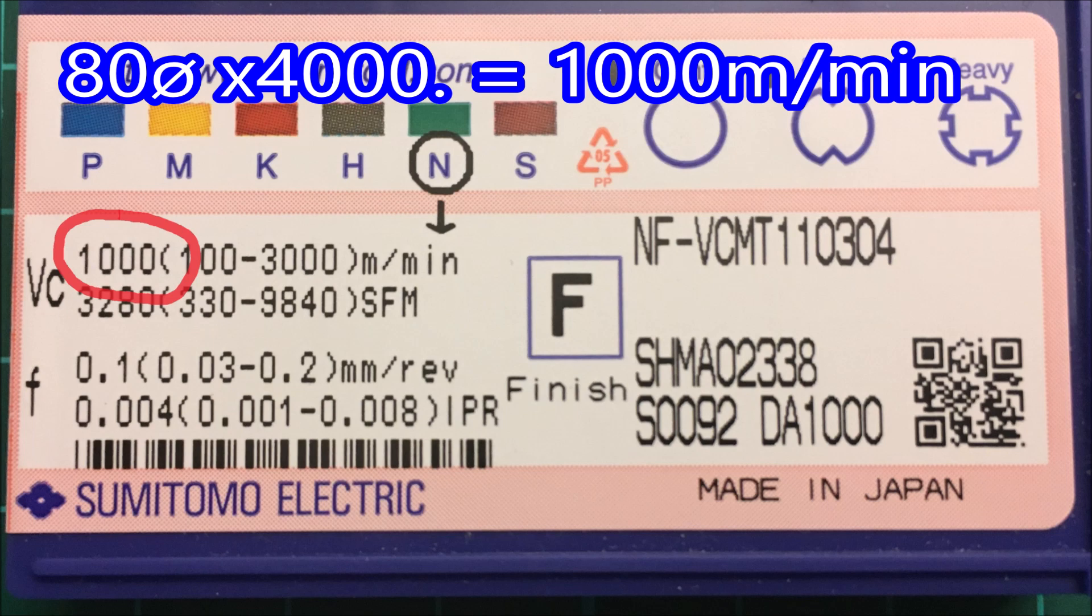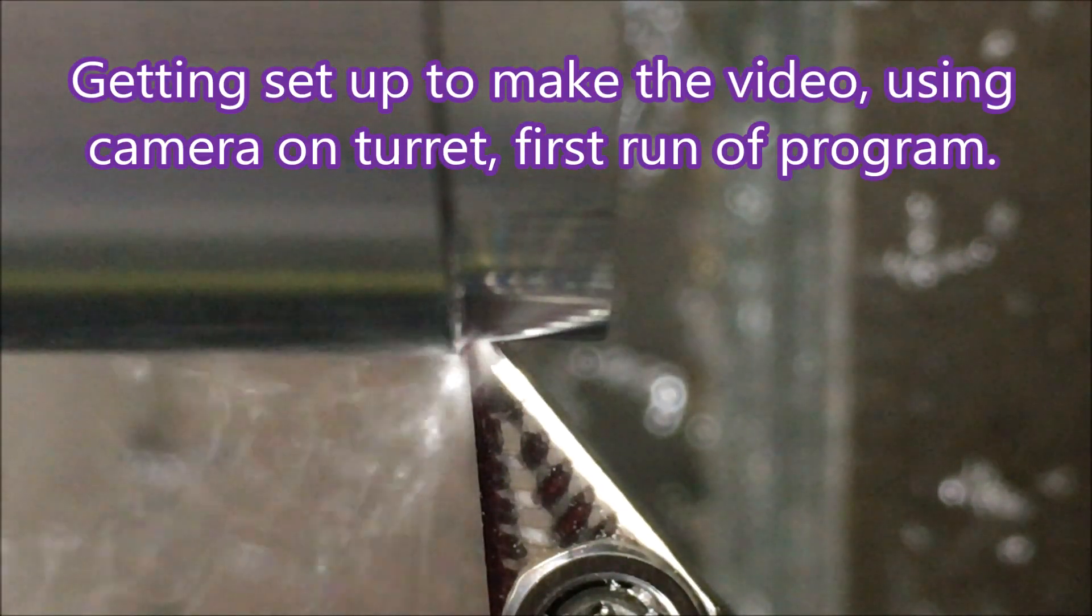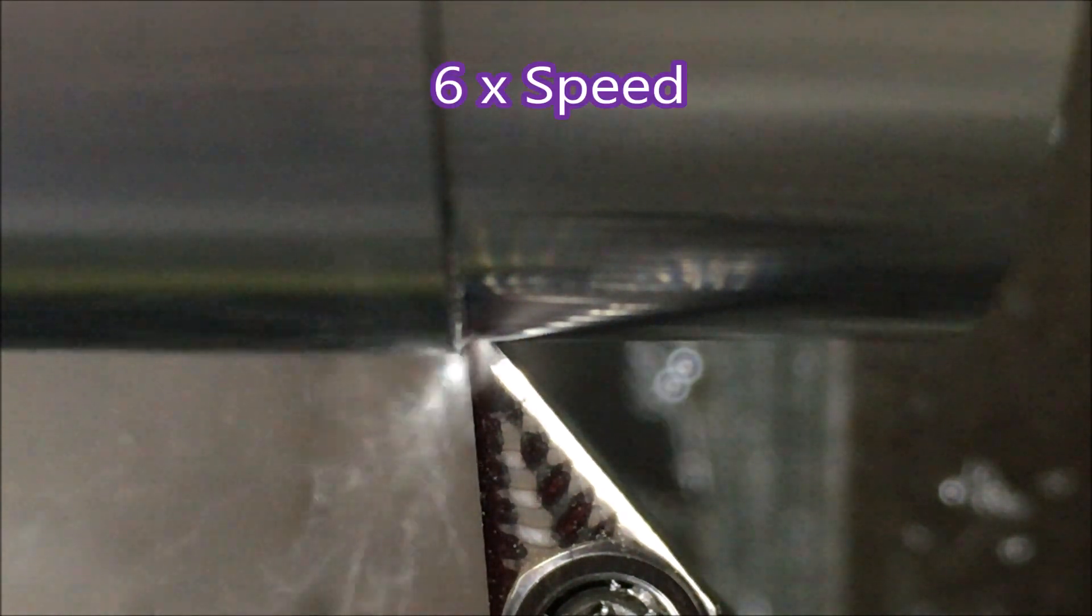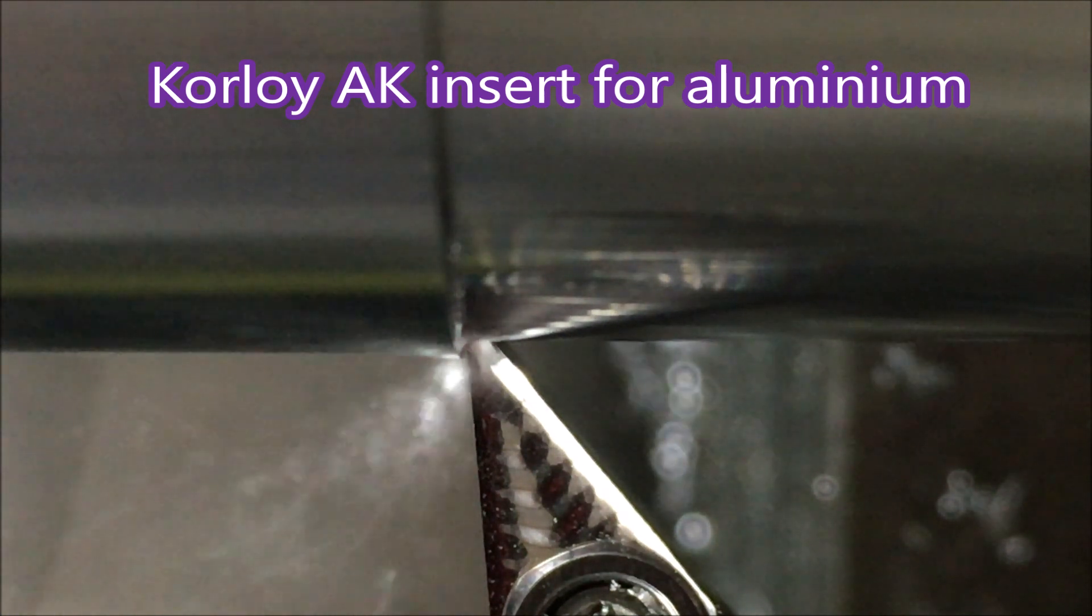I'll be using 80 diameter aluminum stock at 4,000 RPM. Here this is the first run of the program. I'm just using like my phone on the turret to record what's going on and that's a Corloid 8K insert for aluminum.